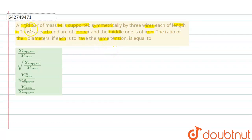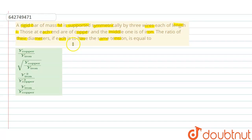In the question, a rigid bar of mass capital M is supported symmetrically by three wires, each having length L. The middle wire is made of iron and the end wires are made of copper. We have to calculate the ratio of their diameters if each is to have the same tension.